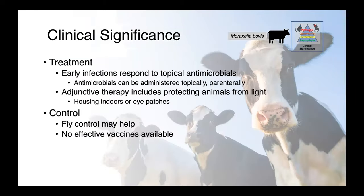Treatment of these infections really relies on antimicrobials, which can be applied either topically or parenterally. Adjunctive measures to protect animals from light are also helpful — housing them indoors and potentially giving the cows eye patches to alleviate photophobia and pain. Fly control can be really useful to prevent further transmission to other animals. Unfortunately, we have no vaccines available, so prophylactic measures are not a possibility in this case.